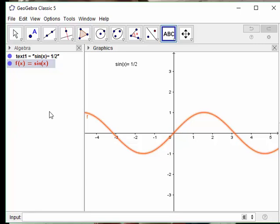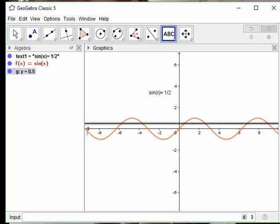So there's the graph of f of x equals sine of x, and then let's plot y equals 1 half. So we have infinitely many solutions. Every time these lines intersect, we get a solution.